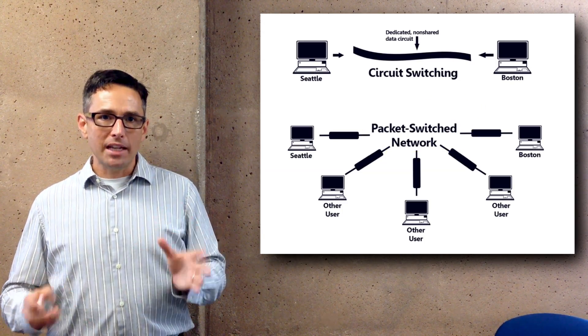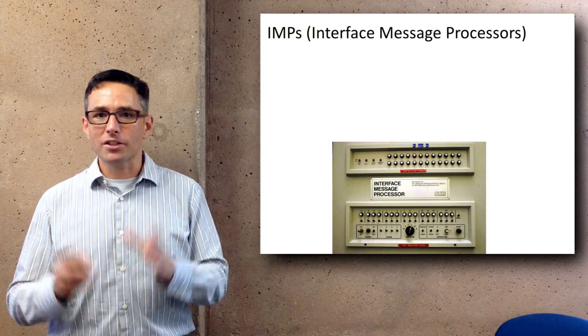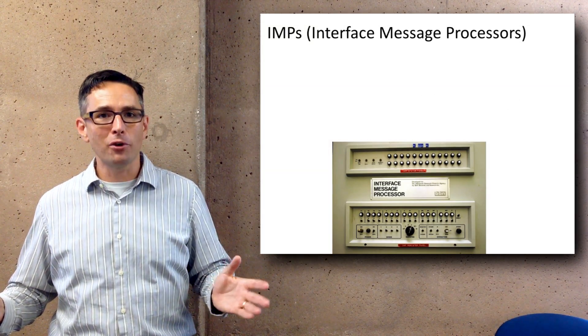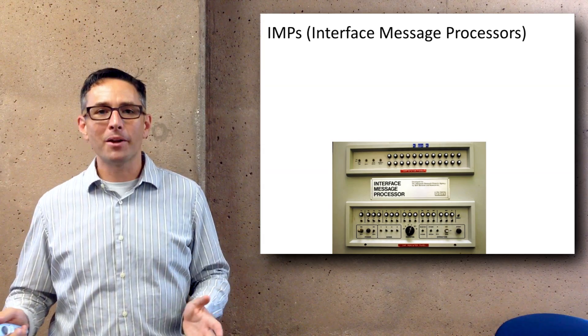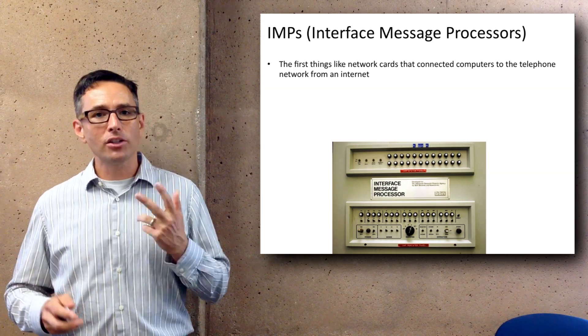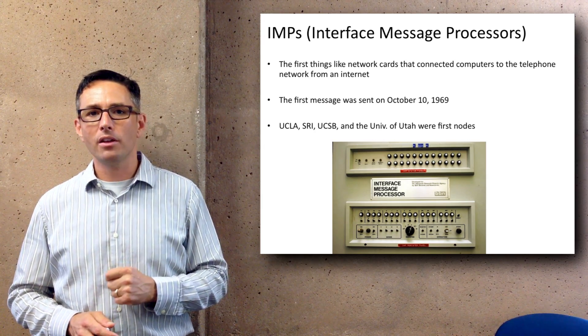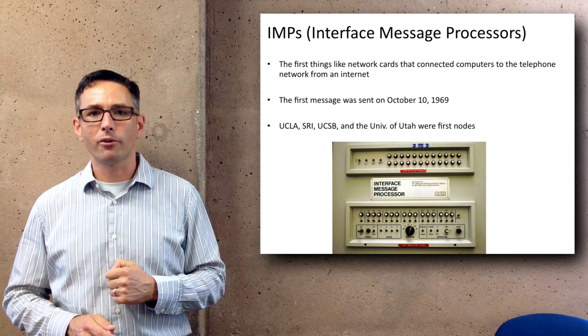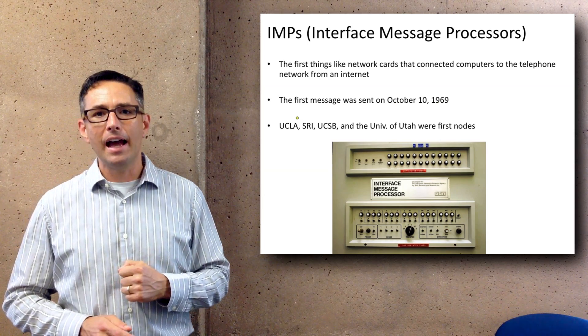The internet was initially formed between four different locations. One thing we don't talk much about is how instrumental the University of California was in the formation of the internet. In fact, two of the first four nodes were UC campuses: UCLA and UC Santa Barbara.